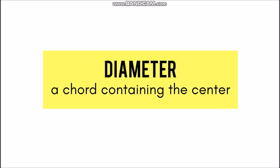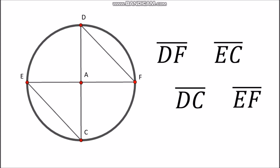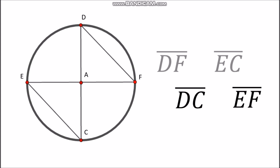We also have diameter. Diameter is a chord containing the center. From the previous chords we identified, for a chord to become a diameter, it must contain the center. Therefore, the diameters are segment DC and segment EF.